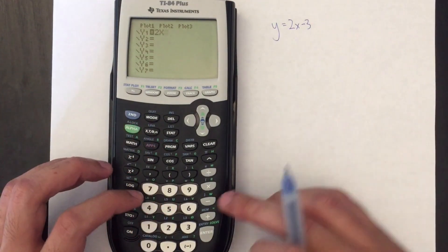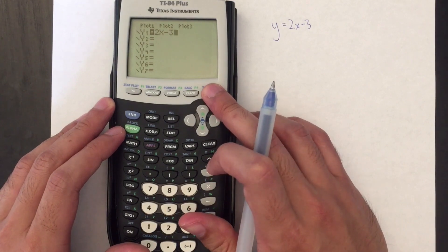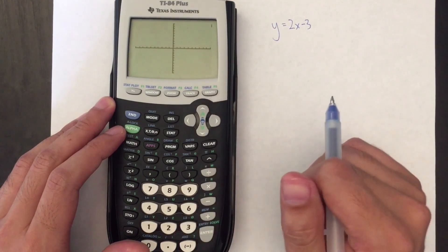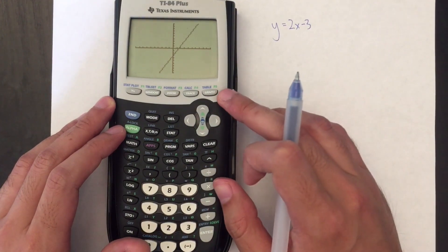When I input this in my calculator what I expect to see is a straight line with a slope of 2, and when I press this graph button on the right that is indeed what we see.